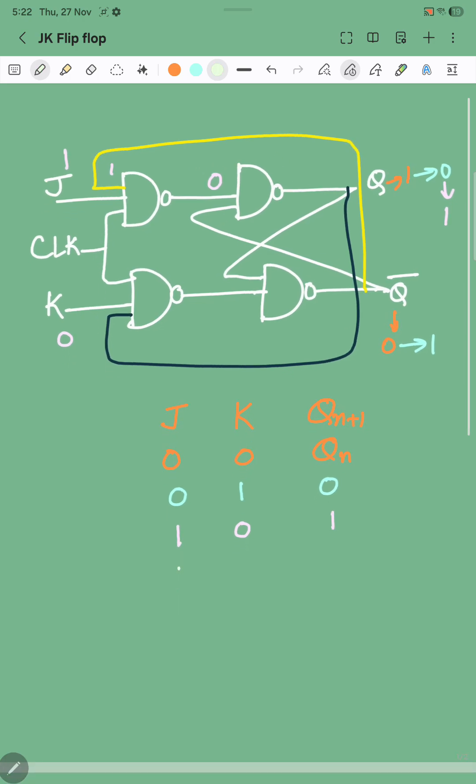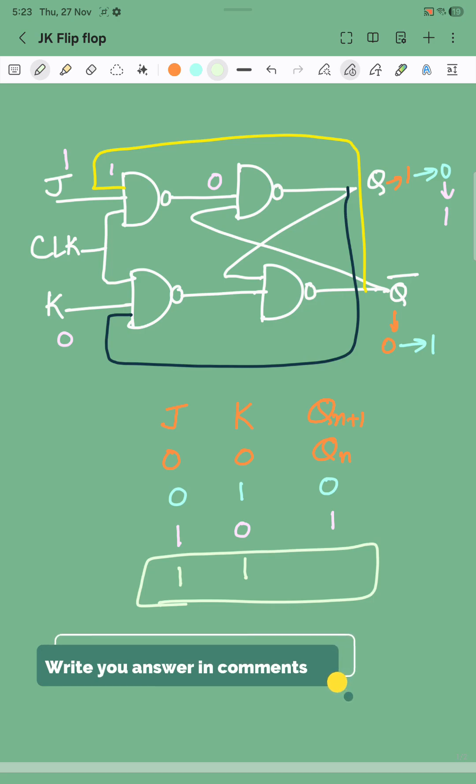Now let us know what happens when J is 1 and K is also 1. If you have watched the previous video, you should be able to tell this answer. If not, then also let us know in the comment section what will be the output when J is 1 and K is also 1.